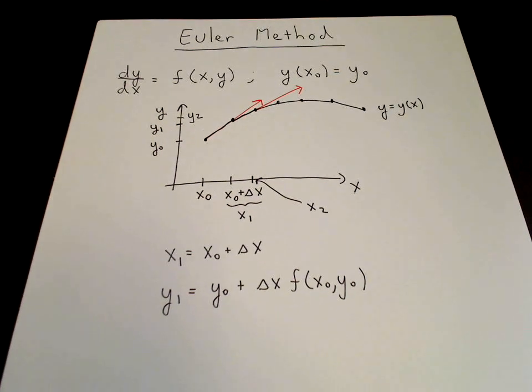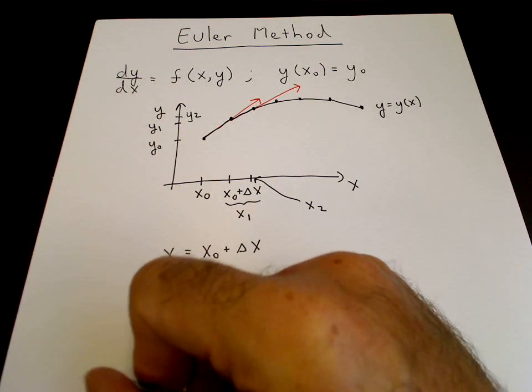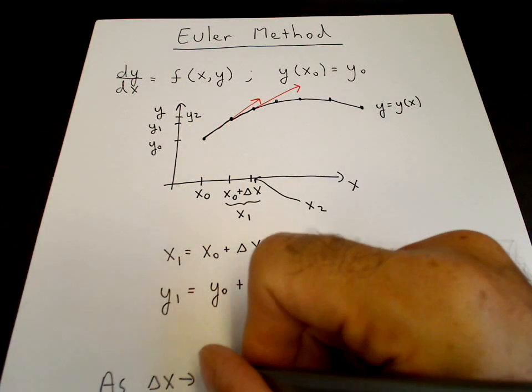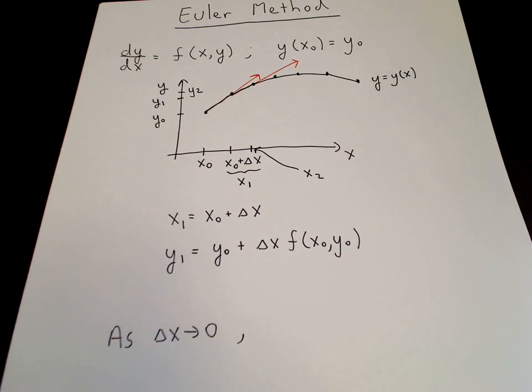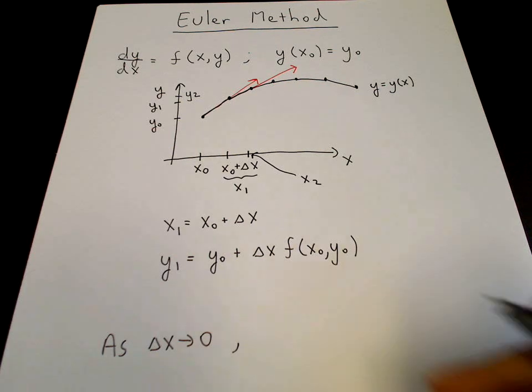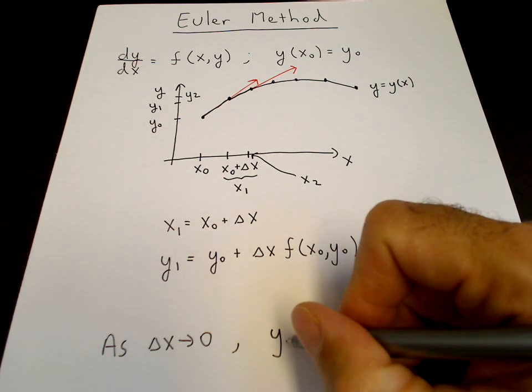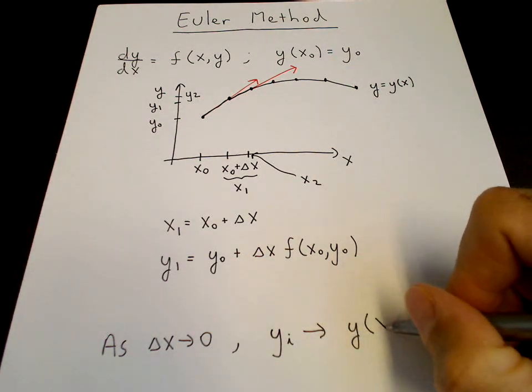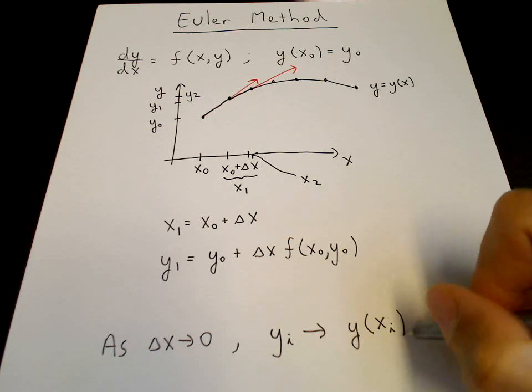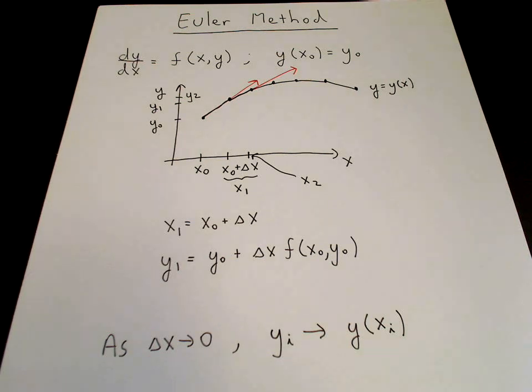Now the nice thing about Euler's method is that as Δx goes to 0, then our solution goes to the solution of the differential equation. So y sub i goes to y at the value of x, this particular value of x. So you get convergence of the solution.